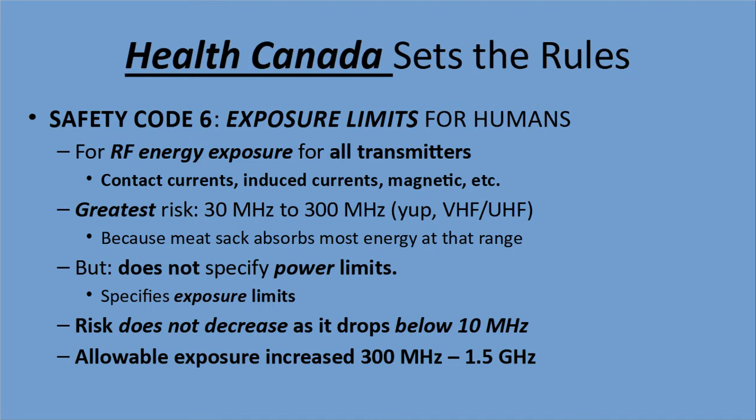For RF energy exposure for all transmitters — and that covers everything: contact currents, induced currents, magnetic, things like that — the greatest risk on the frequencies we transmit are 30 megahertz to 300 megahertz. That's the biggest risk range to the human body because you, the meat sack, absorb most energy at that range.